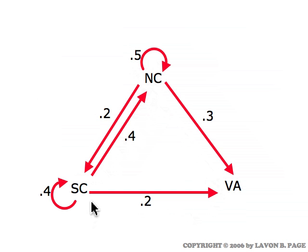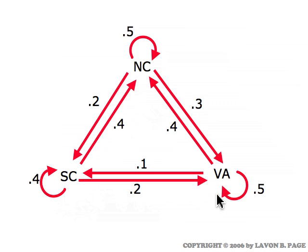Similarly, we put in the data from South Carolina. The South Carolina rentals: 40% are returned there, 40% go to North Carolina, and 20% go to Virginia. And for the trucks rented in Virginia, 50% are returned in Virginia, 10% go to South Carolina, and 40% go to North Carolina. So we've now included in this picture all the data that was given to us in the statement of the problem.